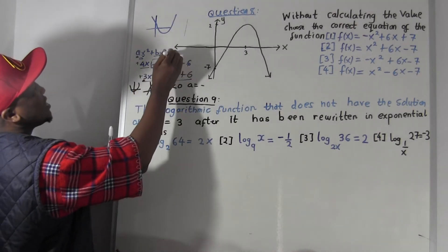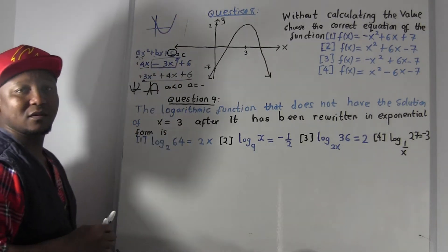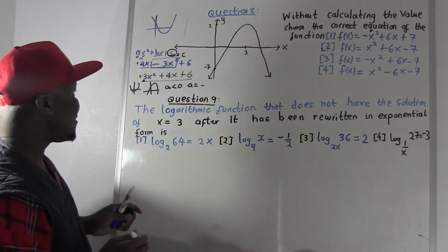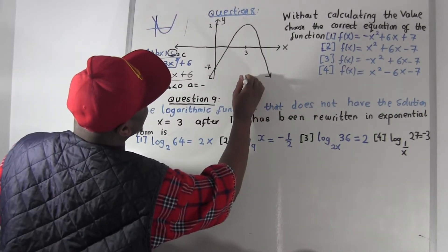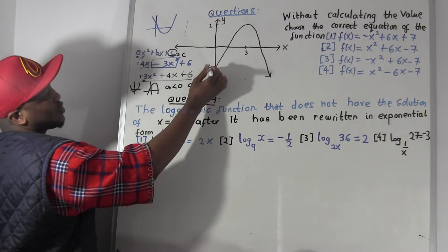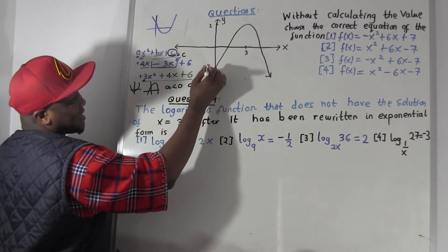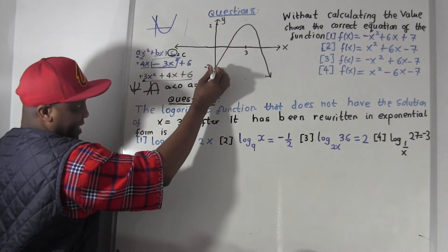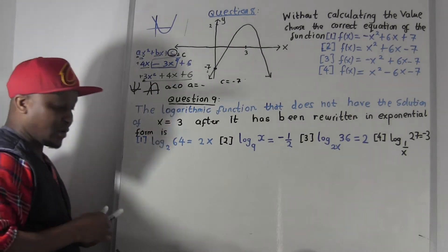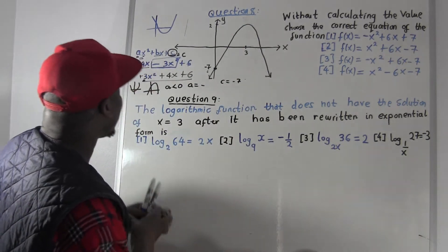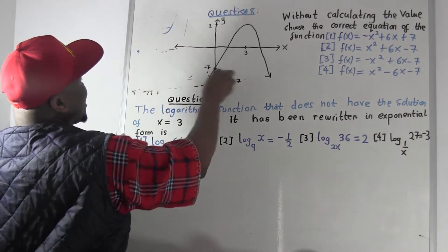Another important thing: this value 'c' here — we call it the y-intercept. The value of 'c' is the y-intercept. So for example if c = −7, that means this graph cuts the y-axis at −7.